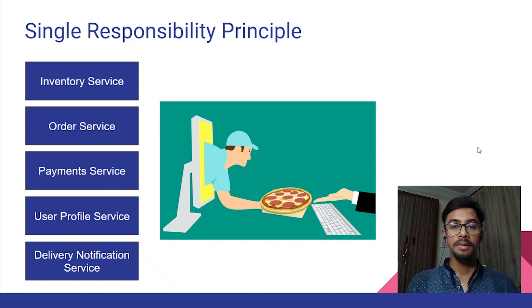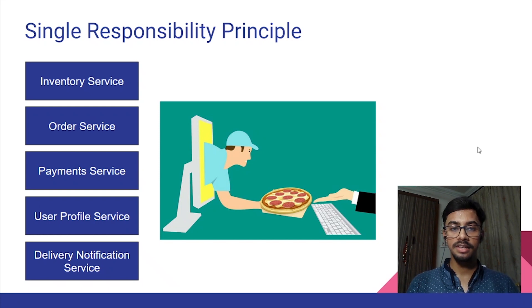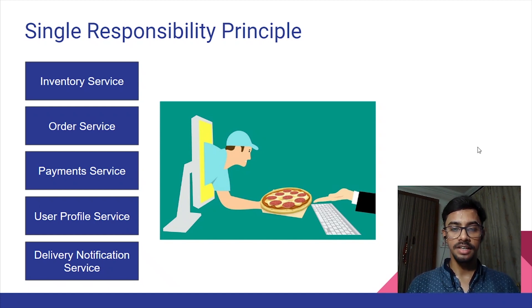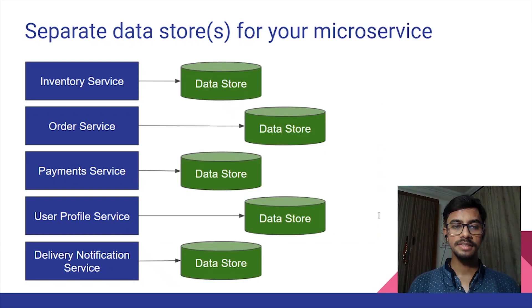Let's say you are building microservices for ordering a pizza. You can consider building the following components based on the functionalities each supports: the inventory service, order service, payment service, user profile service, delivery notification service, etc. The inventory service would only have APIs that fetch or update the inventory of pizzas. The order service would only have APIs for creating orders. Likewise, others would carry the APIs for their own functionality. None of the functionalities of the microservices should be in common with any other microservice.